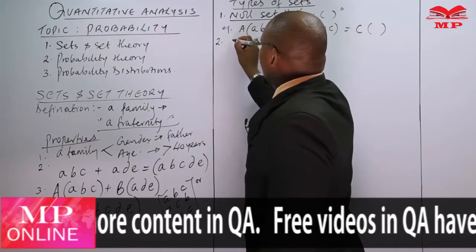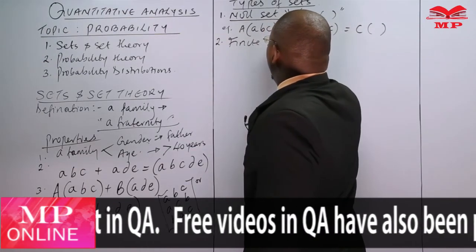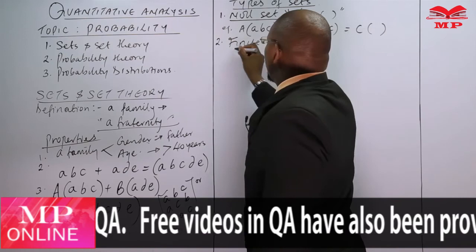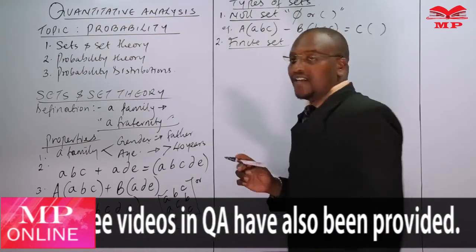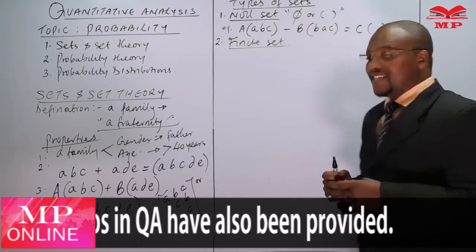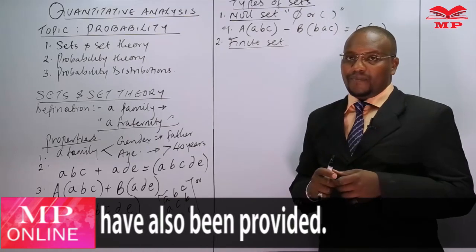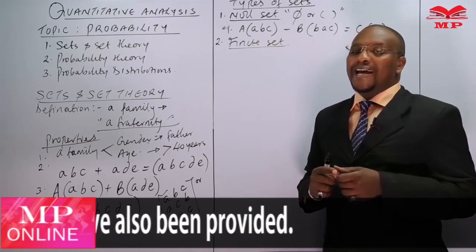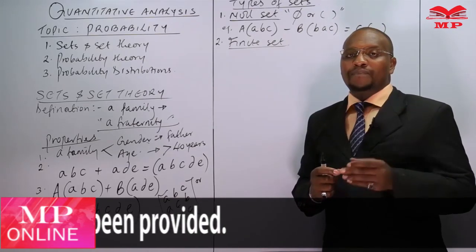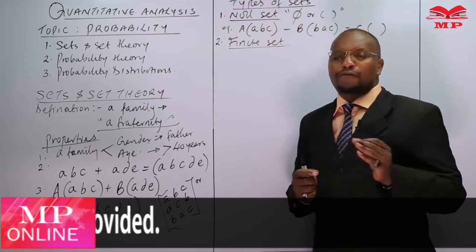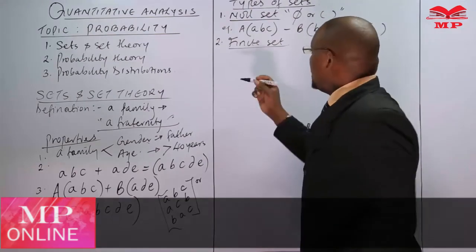The second type of set is a finite set. A finite set is a set whose elements can be listed down in full.